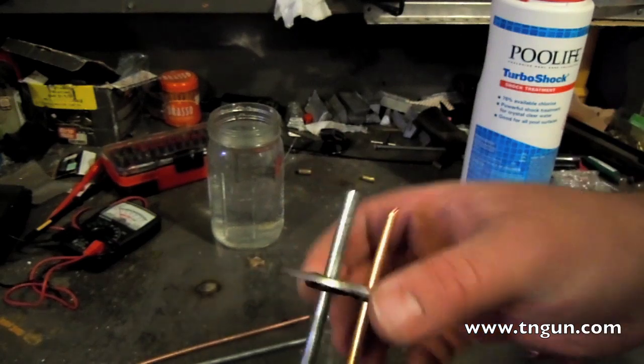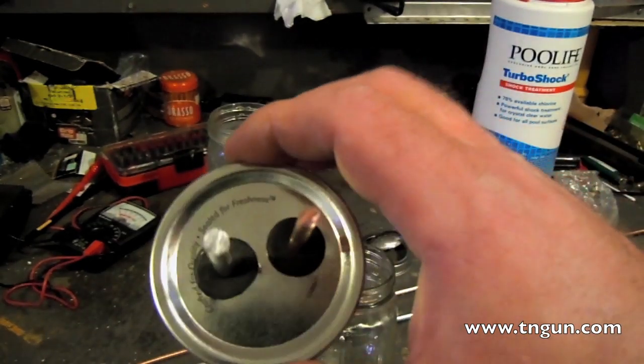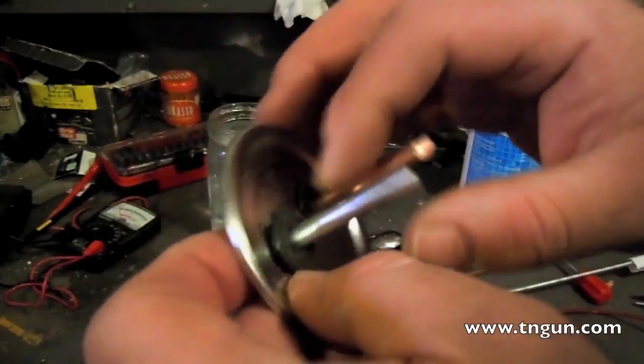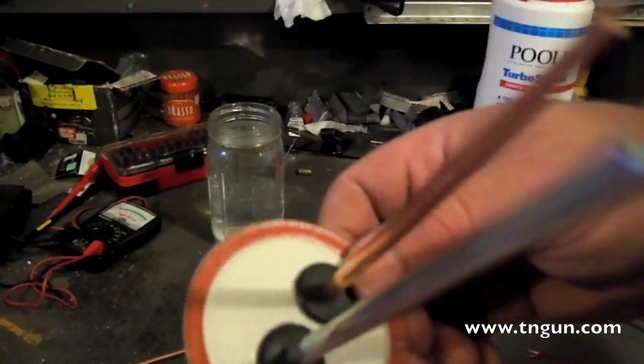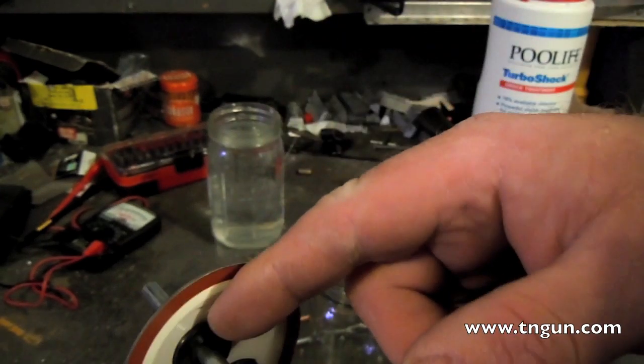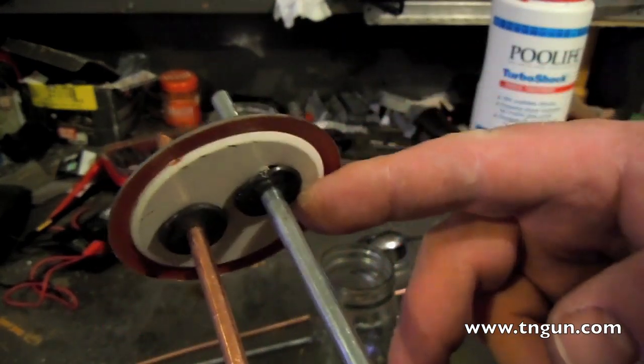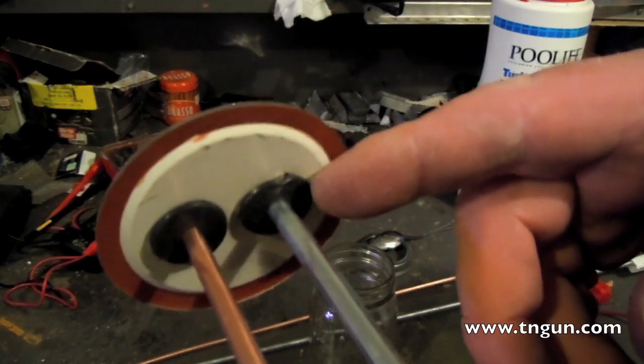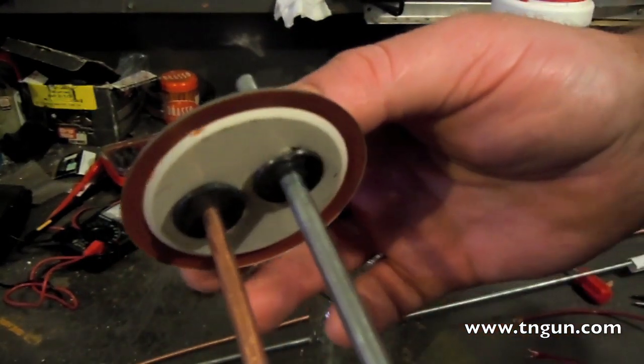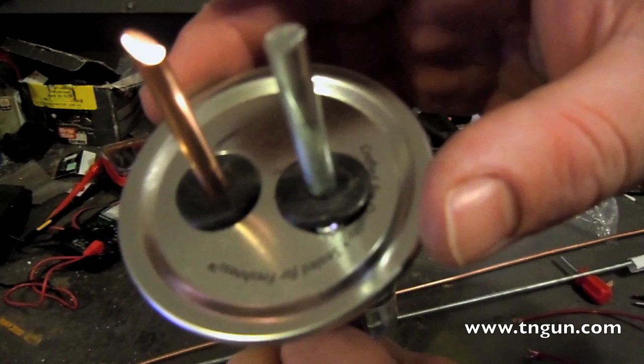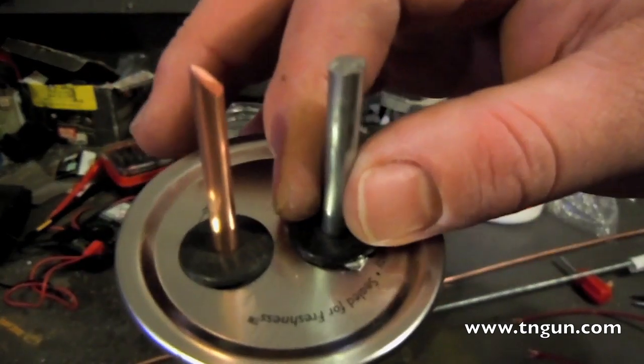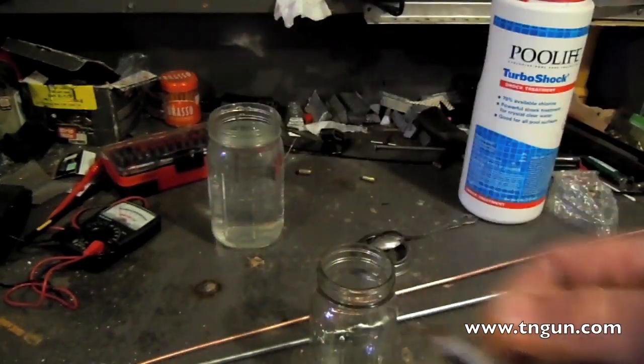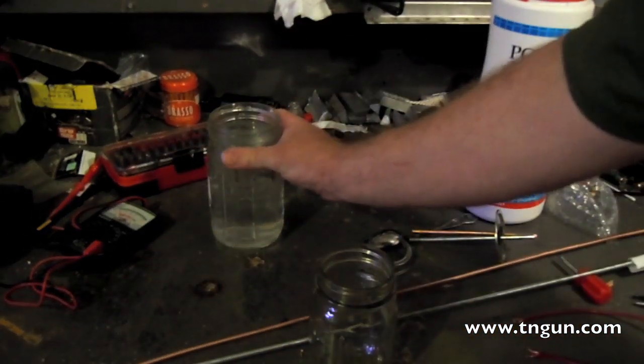Then I just took a mason jar lid and drilled some holes in there and these are some gaskets that some of the brew shops sell to put thermometers into your fermentation device if you're making beer. They were just a couple bucks a piece and I just stuck them in there because they're rubber, they're going to insulate because we don't want these things to touch.